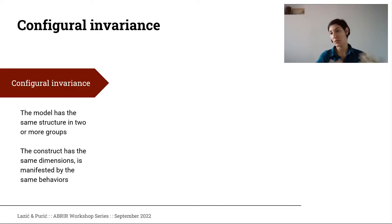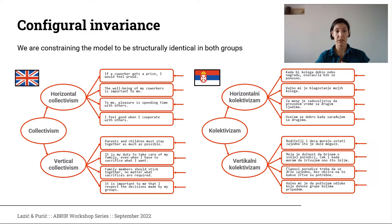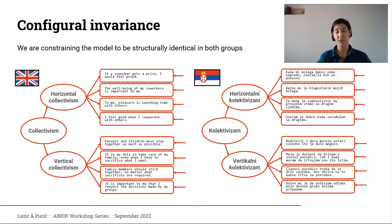The first level of invariance is configural invariance, which means that the model has the same structure in two or more groups — basically that the construct has the same dimensions and is manifested by the same behaviors in both samples. Configural invariance means that in both the English and the Serbian language, horizontal and vertical collectivism are part of the higher-order collectivism factor, and that each lower-order factor has four items with loadings only on their corresponding factor and no cross-loadings.